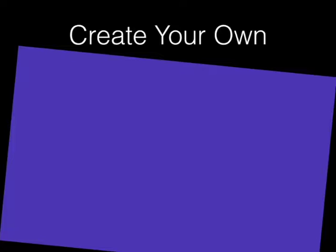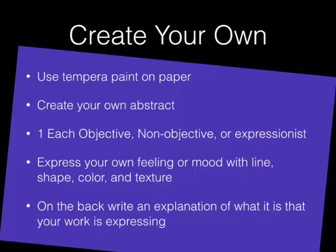Now we will create our own pieces of art — actually three pieces of art. I want you to try each style using temperate paint on paper. Create your own abstract: you're going to do one each of objective, non-objective, and expressionist art. You'll end up with three pictures at the end of this assignment. In each, express your own feeling or mood with line, shape, color, and texture. Then on the back of one of them, write what your work is trying to express — pick the one that you think expresses yourself the most. Good luck, and try to think abstractly.